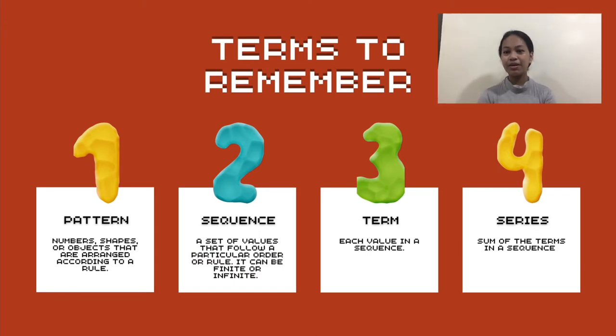Pattern: numbers, shapes, or objects that are arranged according to a rule. Sequence: a set of values that follow a particular order or rule. It can be finite or infinite.